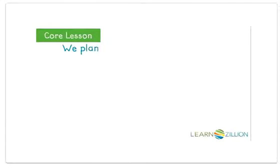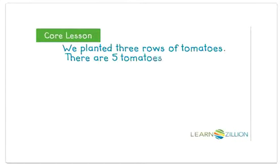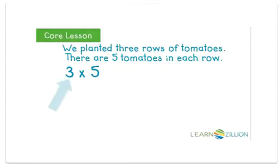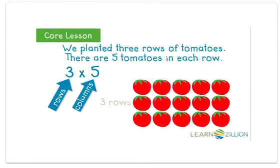Here's a correct story to go with the tomato array. We planted three rows of tomatoes. There are five tomatoes in each row. Three times five — three rows and five columns. Here's our array with three rows and five columns of tomatoes.